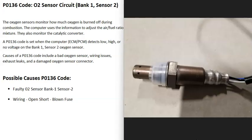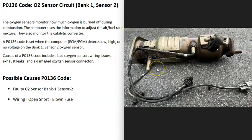Basically, there are oxygen sensors located down on the exhaust, and they do two things. First, they monitor how much oxygen was burnt off during combustion, and the computer uses this information to adjust the air-fuel ratio mixture. Second, they monitor the catalytic converter. When you get this P0136 code, the computer's seeing a problem with one of these sensors.